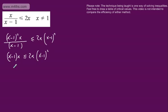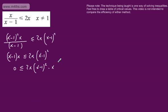I'm going to set the left-hand side to 0 and subtract this from both sides. So what I've now got is 2x times x minus 1 squared, minus x times x minus 1, and that is greater than or equal to 0.